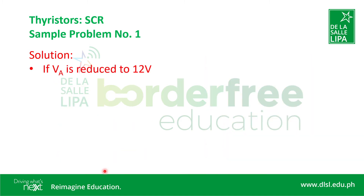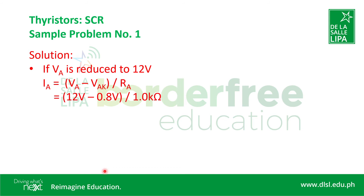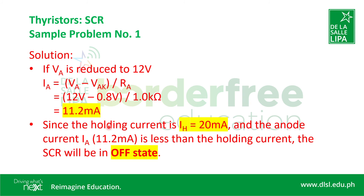For the follow-up question: if the voltage across the anode VA is reduced to 12 volts, we use the same equation for IA and substitute the new VA of 12 volts. The IA will now become 11.2 milliamps. Since the holding current is 20 milliamps and the new anode current of 11.2 milliamps is less than the holding current specification, the SCR will be in the off state and will not conduct further.